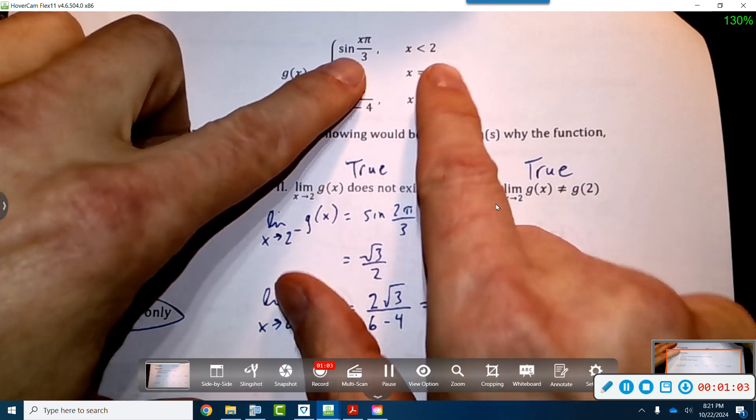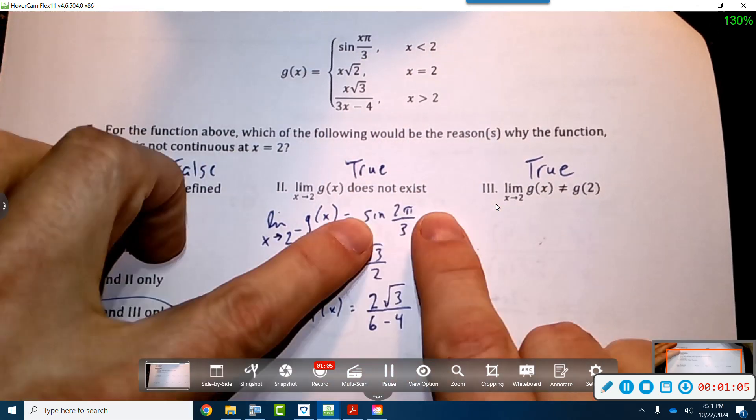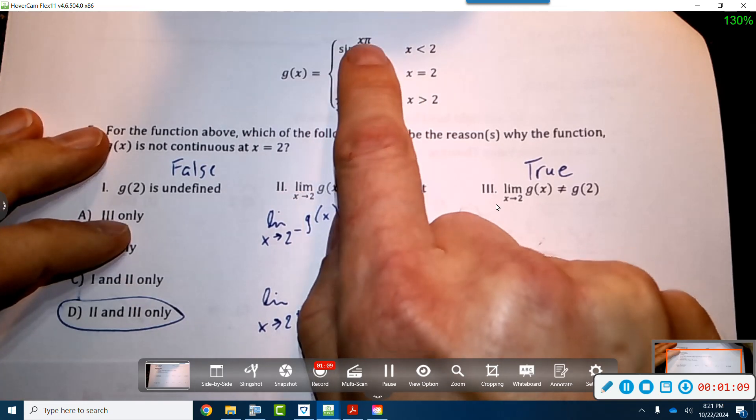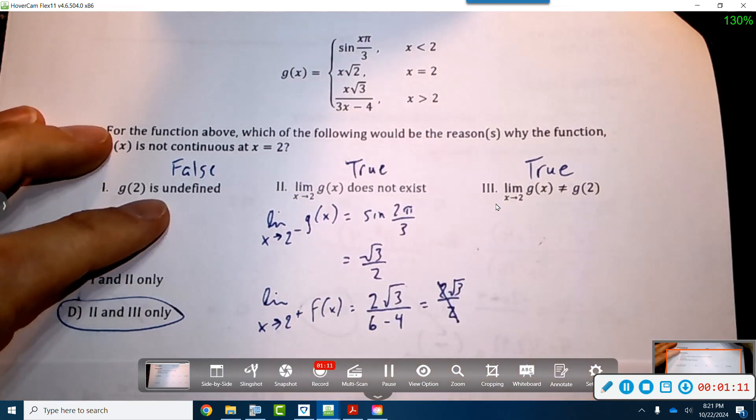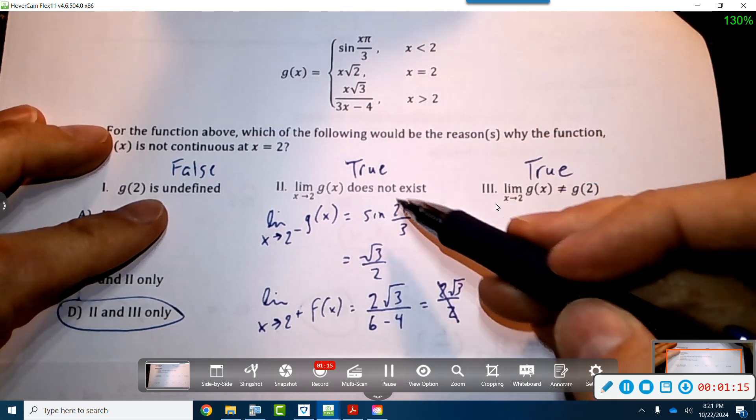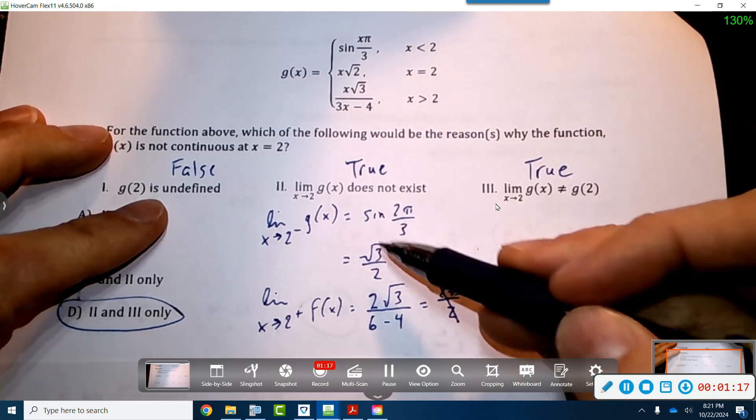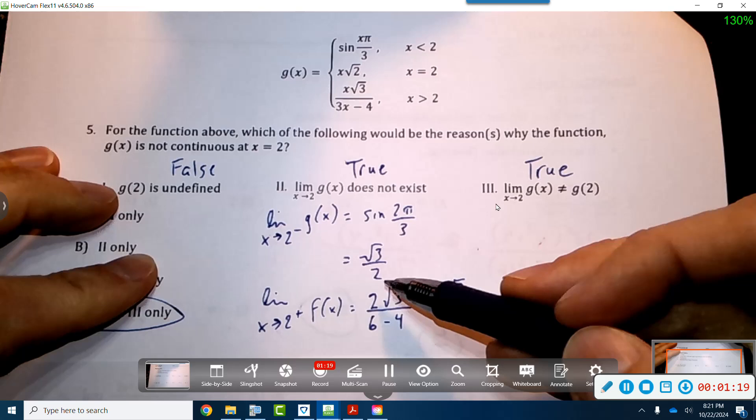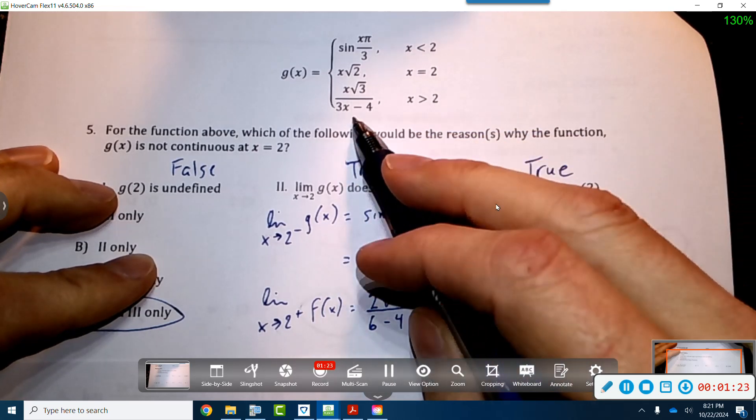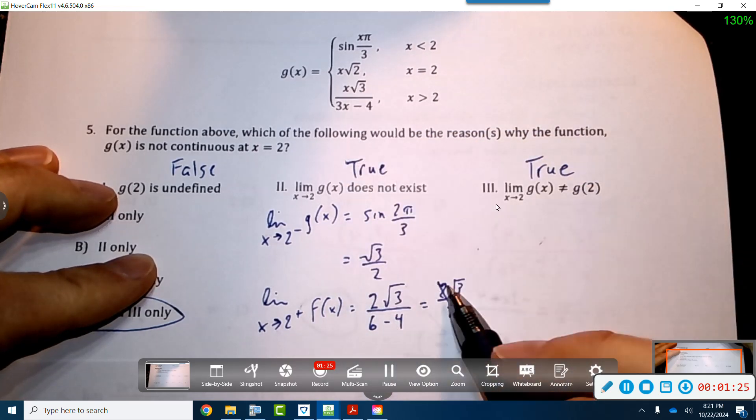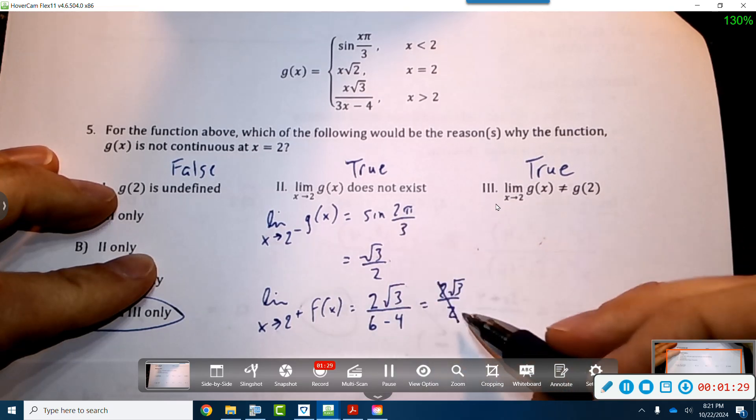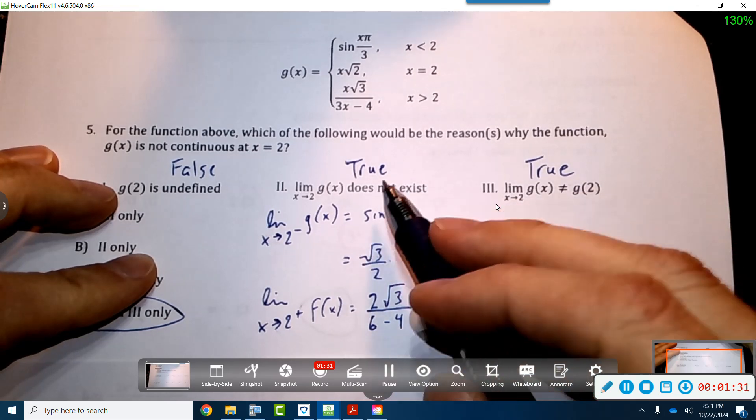Does the limit of g(x) at 2 not exist? What you do is go to the left, plug it in, and you can see the x is right there, so 2π over 3. Let me actually use a pen here. 2π over 3, and the sine of 2π over 3 is radical 3 over 2. That's coming from the left. If you come from the right, it's this guy, and if you plug in a 2, you're going to get radical 3. These guys obviously do not equal each other.